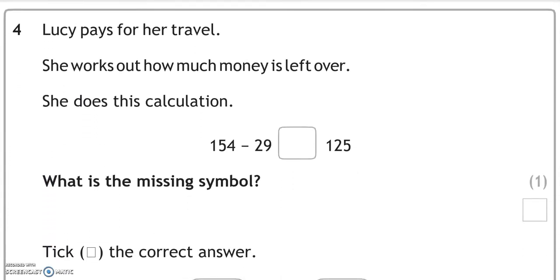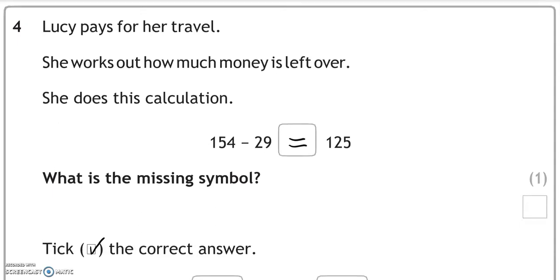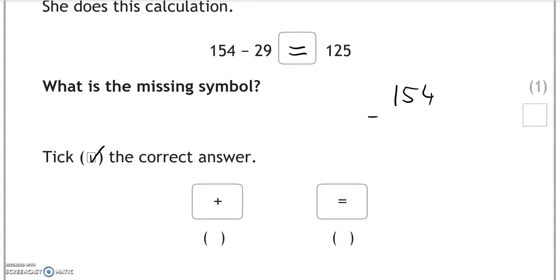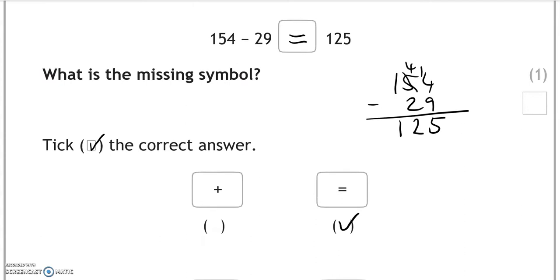Lucy pays for a travel. She works out how much money is left over. She does this calculation: 154 take away 29 equals 125. What is the missing symbol? Tick the correct answer. That should be equals, because 154 take away 29, 14 take away 9 gives us 5, 4 take away 2 gives us 2, 1 take away 0 is 1. So that is equal sign.